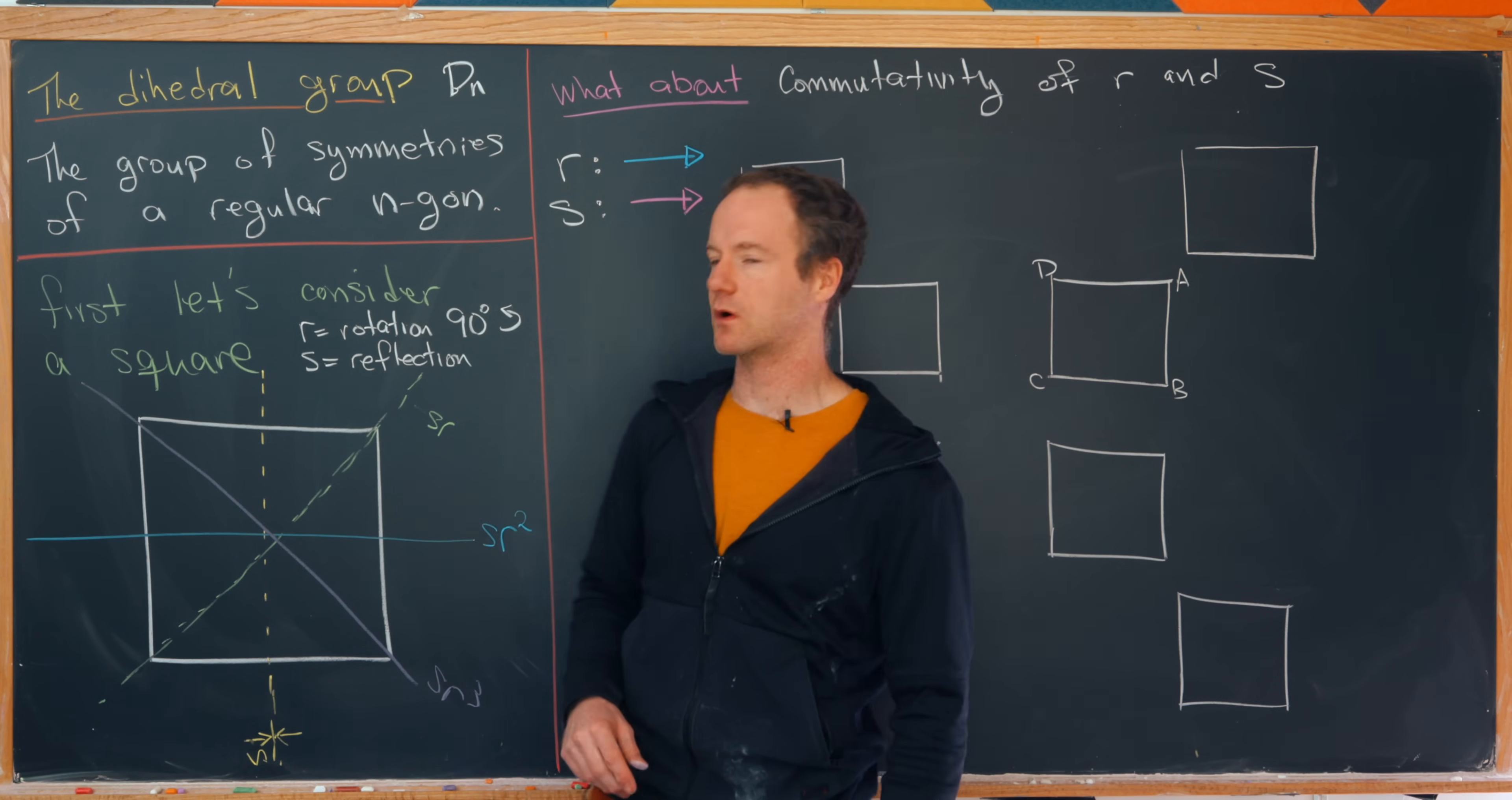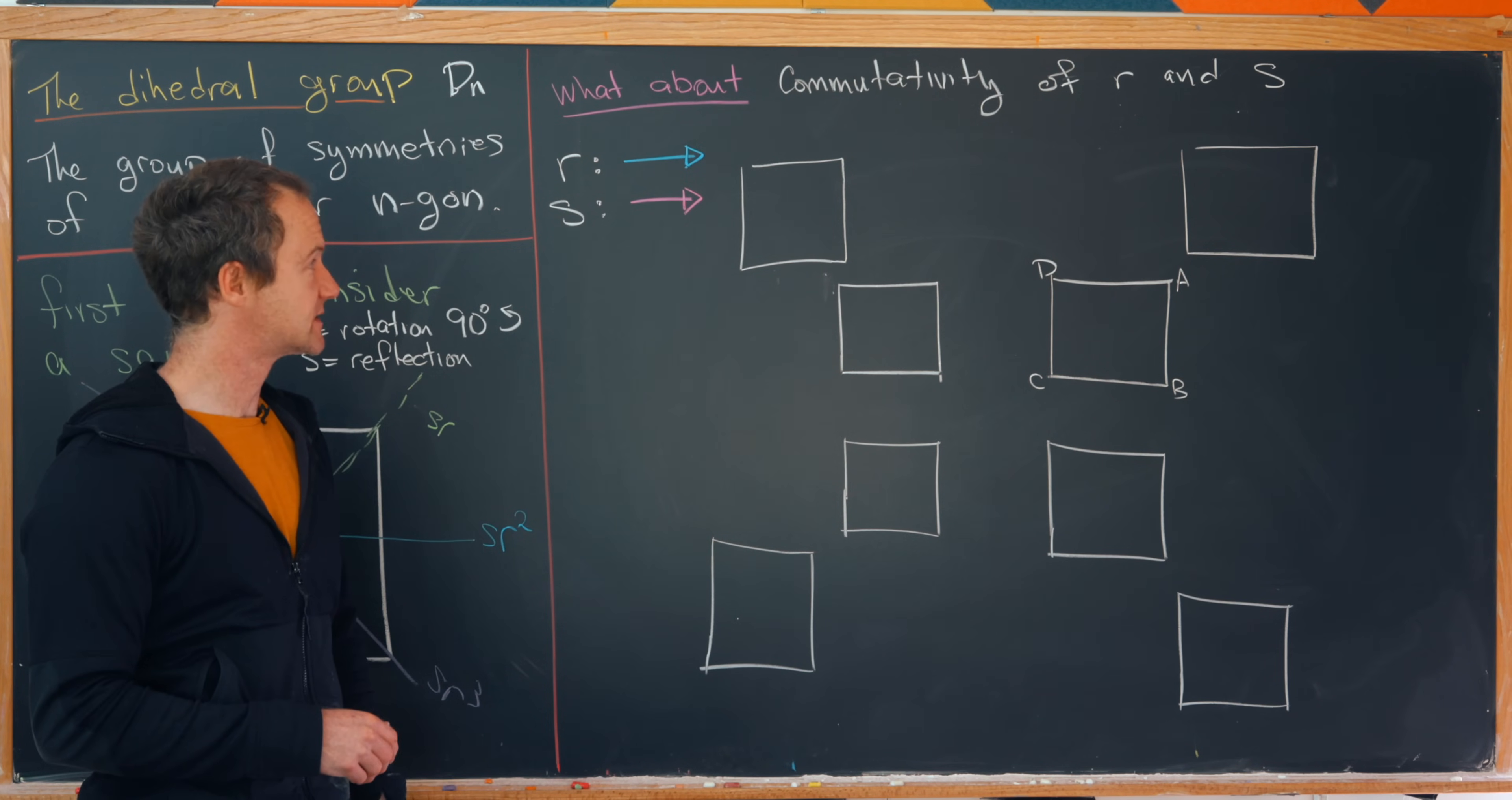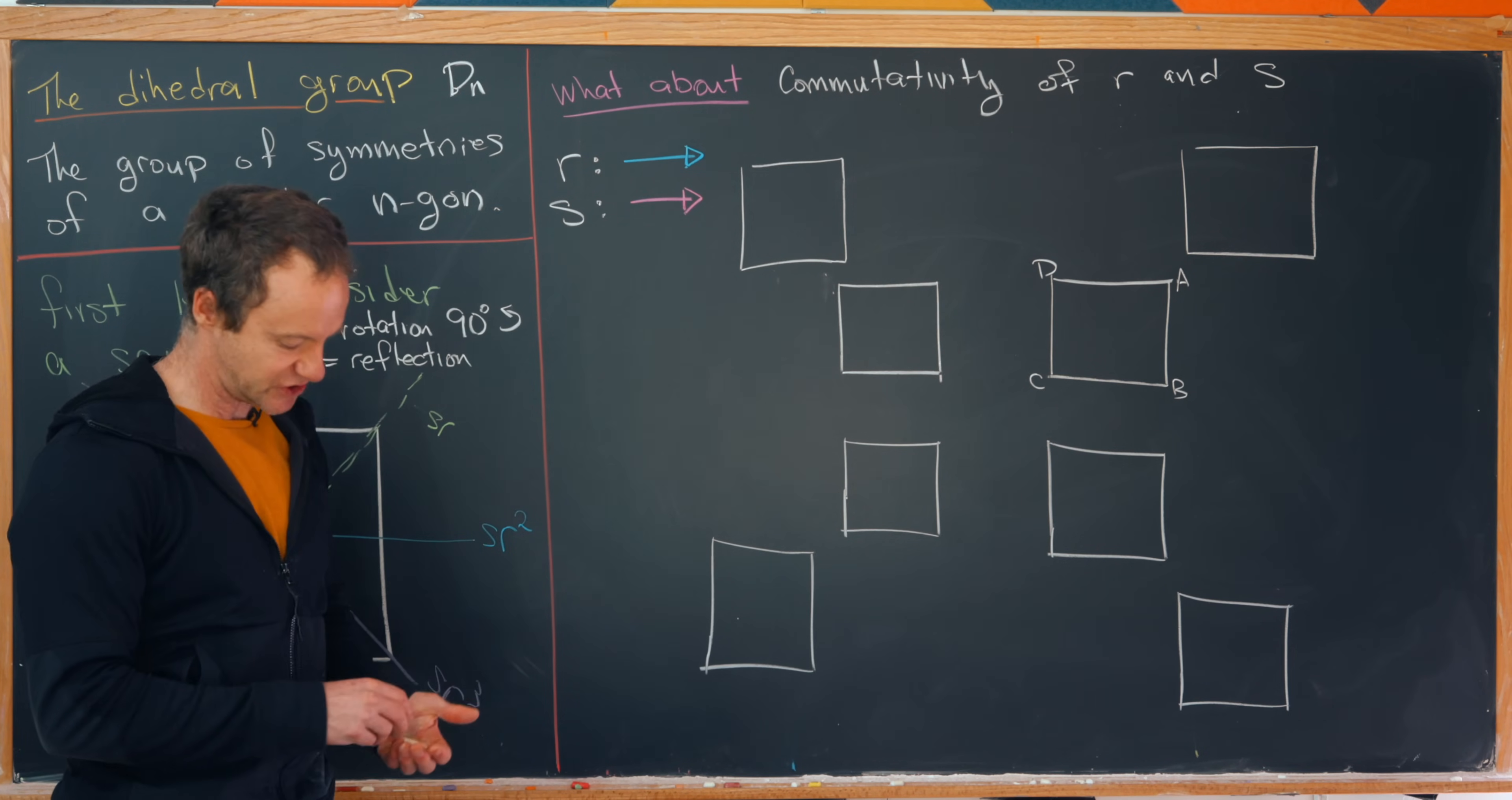Remember, we've got four rotations and four reflections. But it's generated by r and s, so we can describe everything in terms of r and s. So let's say r is this blue arrow. So moving from one square to the other, we'll have this arrow which is blue. And then s is this magenta.